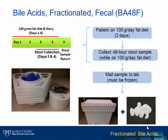The test for fecal bile acids starts with a timed stool collection. The timed collection requires a 100 grams per day fat diet for 2 days prior to collection and also during the collection period, for a total of 4 days on the high fat diet. Collection of all passed stools occurs on days 3 and 4 for a total of 48 hours. The combined sample is brought to the laboratory or mailed. One important aspect is that collected stool must be kept cold, preferably frozen, until delivered — mailed samples should be sent frozen.